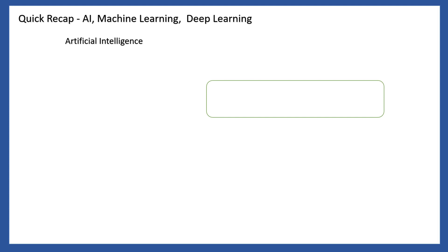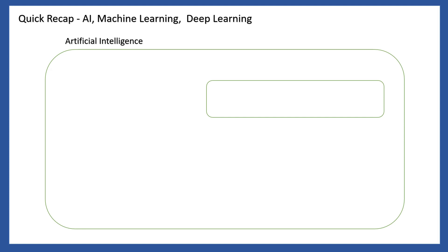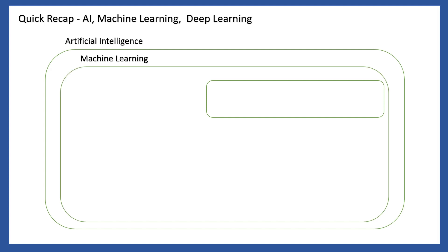We will explain the link from the previous video on artificial intelligence. Machine learning is a subset of artificial intelligence. We will learn about machine learning and its learning types. We will cover supervised learning, where a machine model is trained using labeled data.